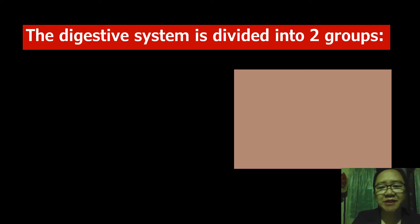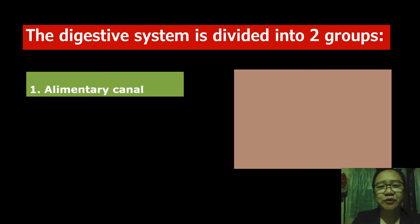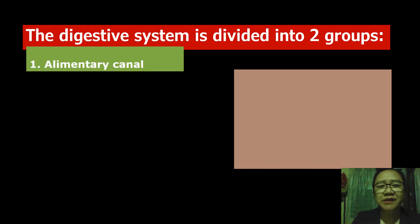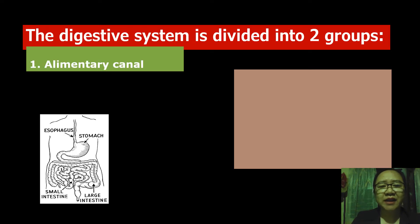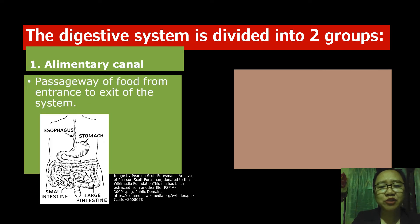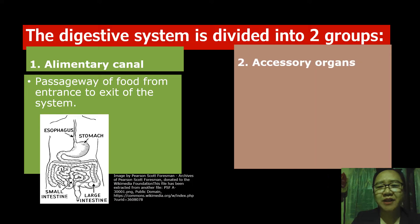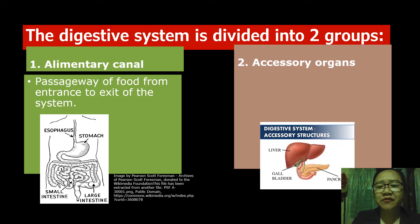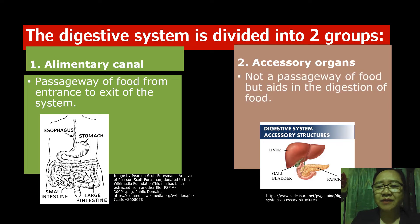The digestive system is divided into two groups. One is the alimentary canal. It is the passageway of food from the entrance to the exit of the system. The second group is the accessory organs — the liver, the gallbladder, and the pancreas. Accessory organs are not a passageway of food, but they aid in the digestion of food.